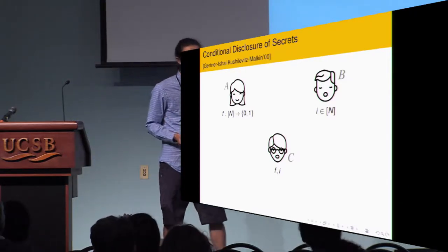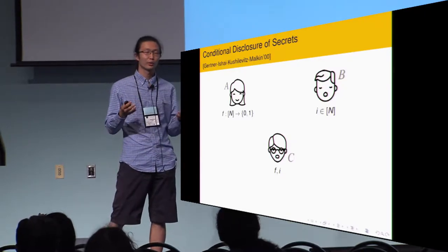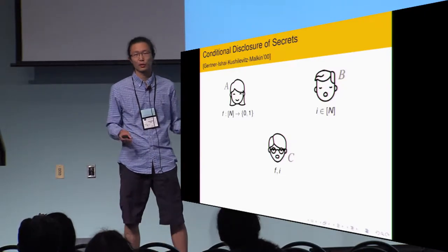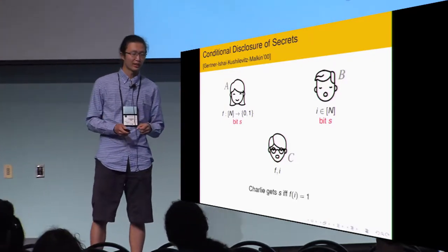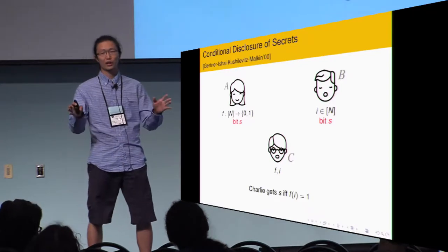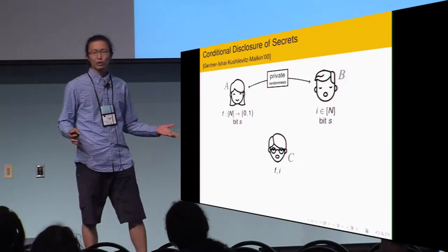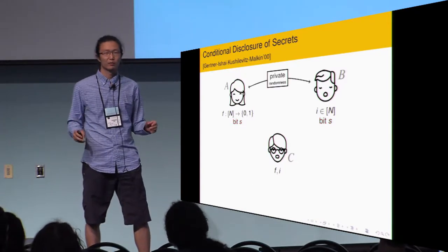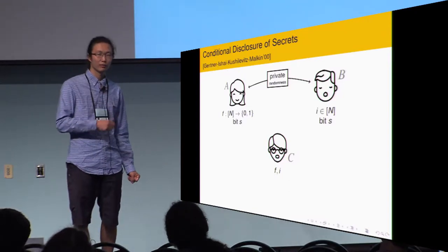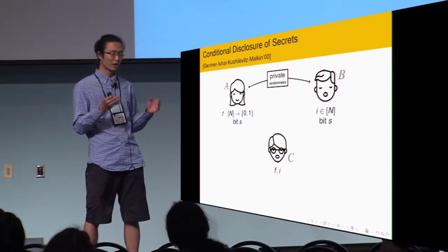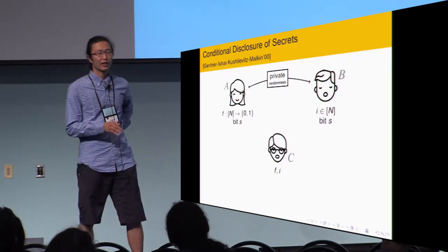There are three parties: Alice, who holds the predicate; Bob, who holds the input i; and Charlie, who knows both f and i. Alice and Bob also know a bit secret, and they want to disclose the secret to Charlie if and only if f(i) equals one. This model is like multi-party computation but with minimum communication. Alice and Bob cannot talk to each other, but they share a random tape.